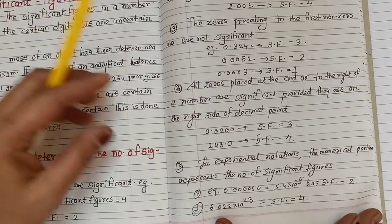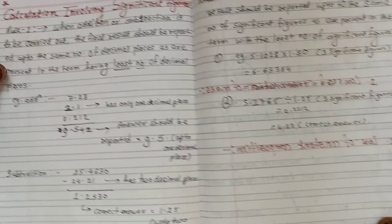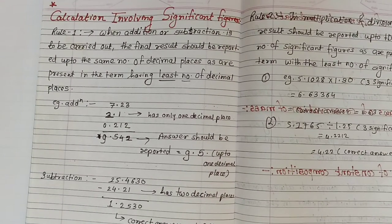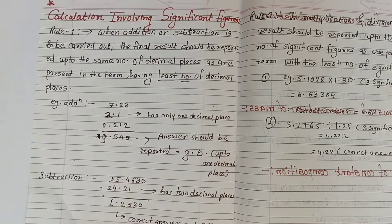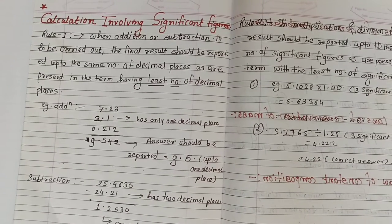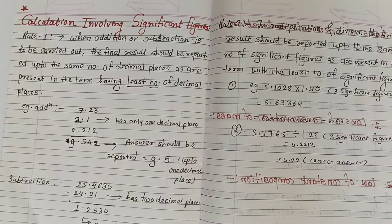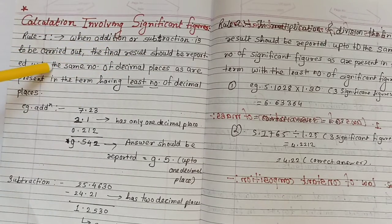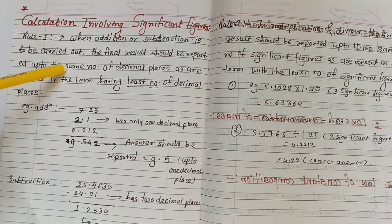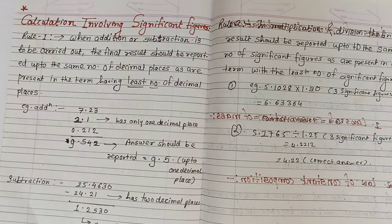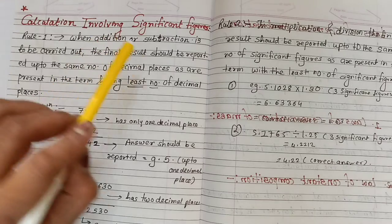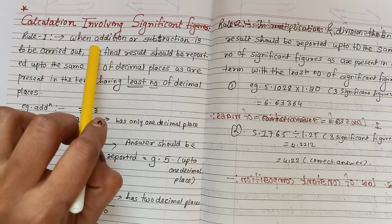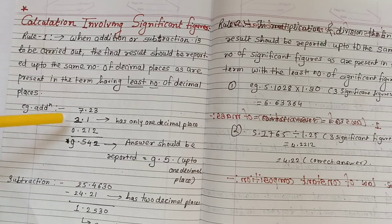So these are all five rules which we have to take into consideration. Now comes a little calculation — calculations involving significant figures. There are some rules for this. Rule number one: when addition or subtraction is to be carried out, the final result should be reported up to the same number of decimal places as are present in the term having the least number of decimal places.